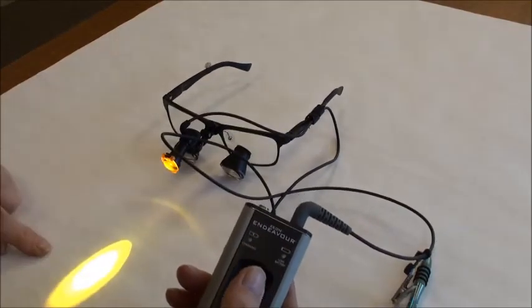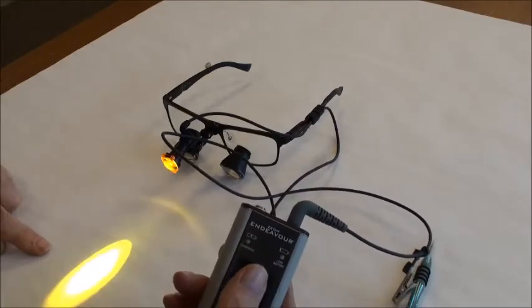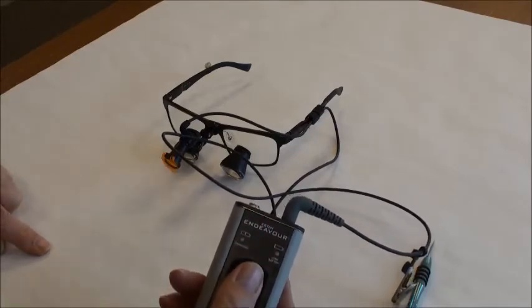By tapping, you can cycle through low, medium, and high brightness. Hold for two seconds to turn it off.